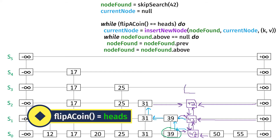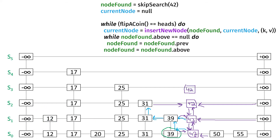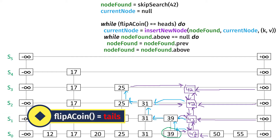Let's say we flip the coin one more time and it was heads again. We insert 42 at the next level and set the references. We backtrack — 31 does not have an above reference so we go to the previous node. 25 does have an above reference, so we set 25's next reference to this new node, positive infinity's previous reference to this new node, and this new node's below reference to 42 in the same tower. Now we flip the coin again and it's tails — that means we're done.